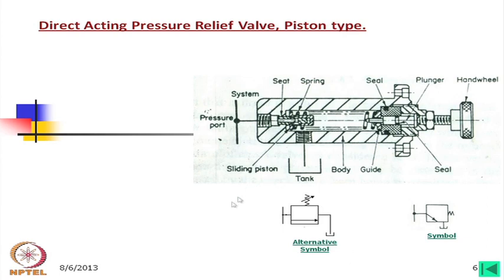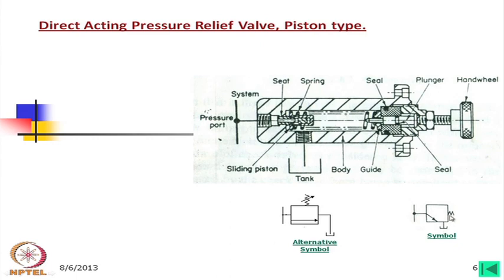Alternative symbols can also be used — this arrow indicates that we can regulate and adjust the spring, even if not shown explicitly. There are only rare cases where a fixed compressed spring is used, typically a set relief valve inside some system. It is also possible to have a fixed one where the set pressure is always the same.